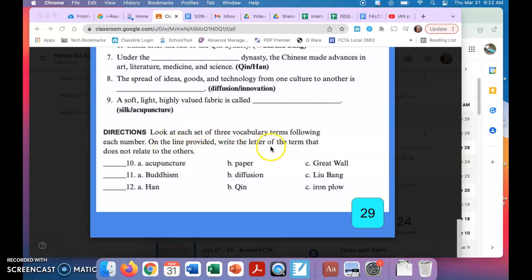And then the final section here, you're going to look at each set of three vocabulary terms and then on the line provided write the number of the term that does not relate or connect to the other terms. So for number 10, your three words are acupuncture, paper, or Great Wall. Which one of those do not belong? Which one was not talked about in this lesson? Number 11: Buddhism, diffusion, or Liu Bang. Which one does not belong?